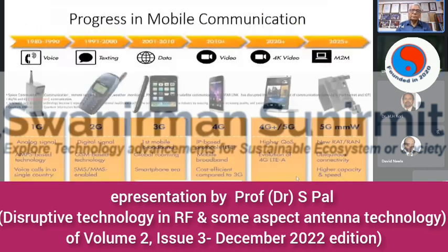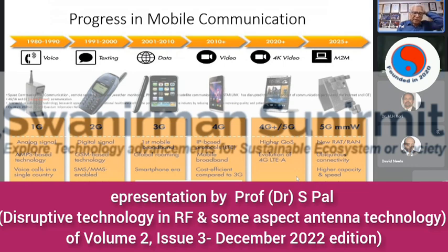Looking at the progress in mobile communication: first there were long antennas using analog signal — mostly in America, while Europe and others went digital, which is why today we are thankful to the Europeans for not following the Americans. We then moved to 2G, second generation digital signal, GSM-based technology — SMS, MMS, email, web, camera enabled — and with 2.5G came GPRS. Then came 3G, the first mobile broadband era with global roaming and smartphones. Now 4G is IP-based, cost-effective compared to 3G, with the ability to watch movies.